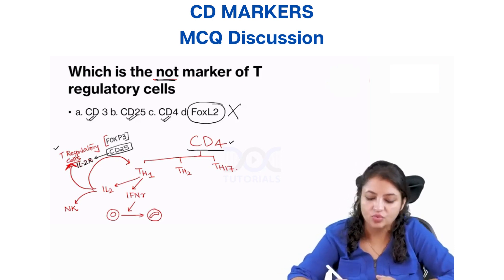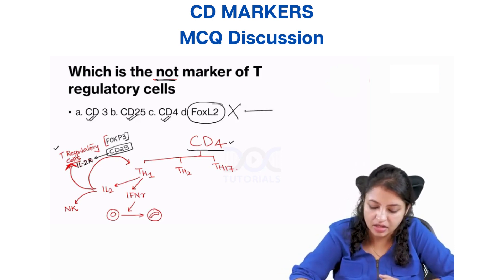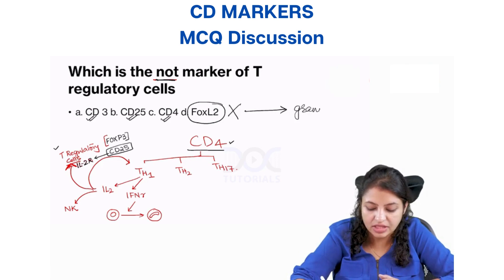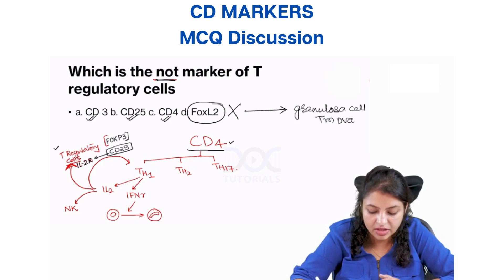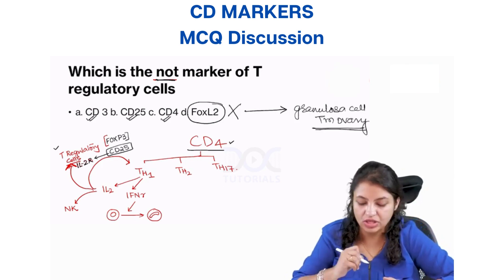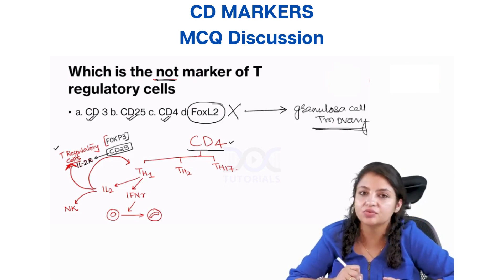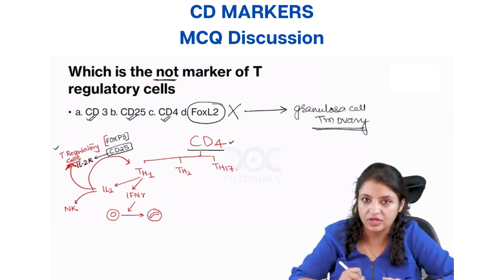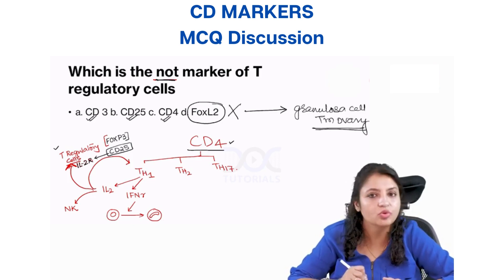FOXL2 is a marker which is expressed on granulosa cell tumor of the ovary. So granulosa cell tumor of the ovary expresses FOXL2, and this is what you all have to remember.